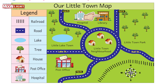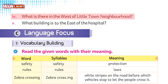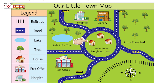Now imagine you are at the library. In which direction would you go to reach the town neighborhood? Find out where the library is, make yourself stand over there, and find the direction towards the neighborhood. After observing, you will come to know that if you want to move from the library to the neighborhood you will have to follow the south direction. Next question: what is to the west of the little town neighborhood? On the west side there is a lake, so you will write: there is Little Lake Town to the west of the little town neighborhood.